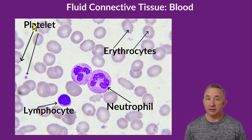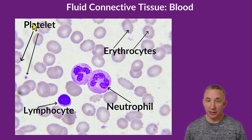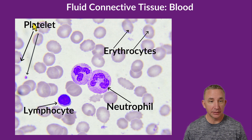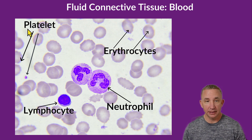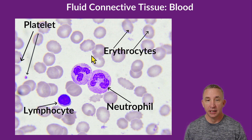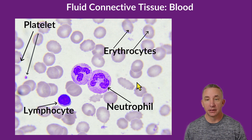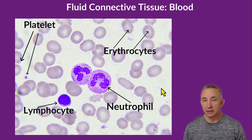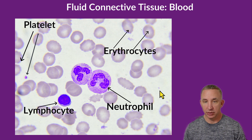Then I have little specks throughout, and I've highlighted a couple of them as platelets — just these tiny little specks. Remember, they're just fragments of cells. These are platelets that we use for clotting.